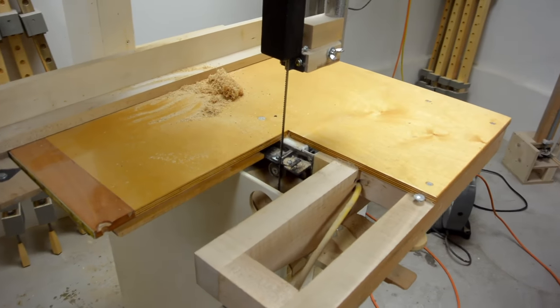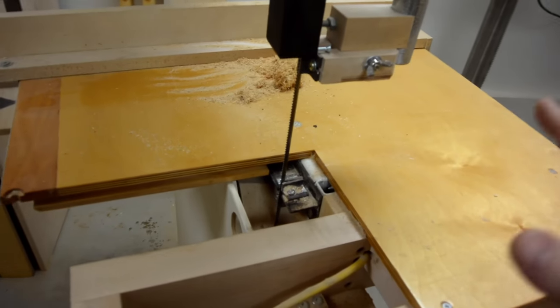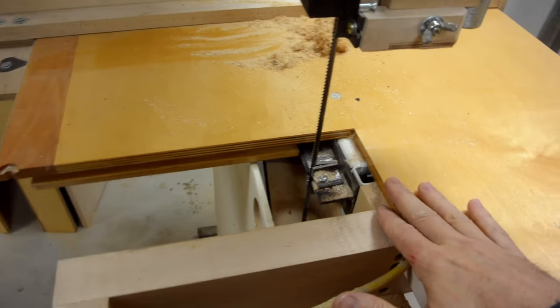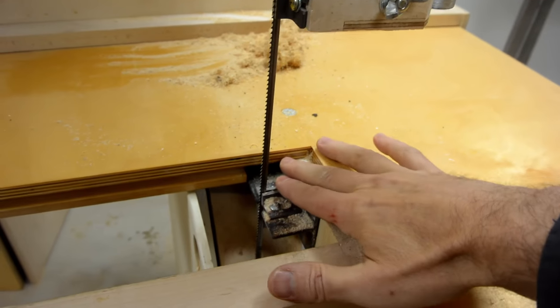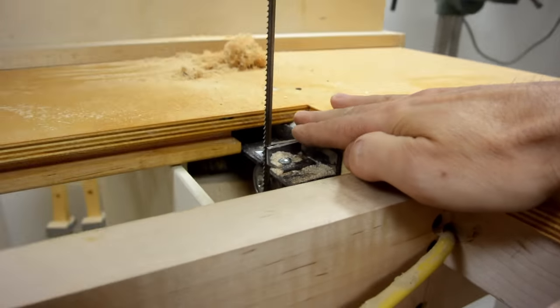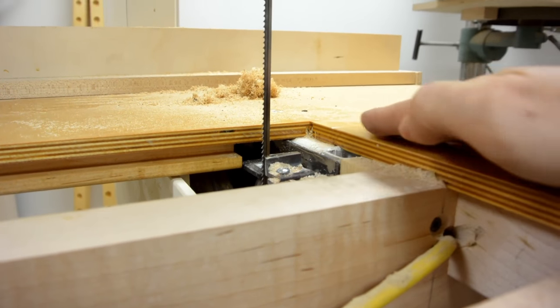This is a neat feature about John Heist's bandsaw where part of the table pulls out for blade changes. It makes it really easy to get at the bottom blade guides, and because this is a non-tilting table, he was able to put these blade guides really close to the actual top of the table.